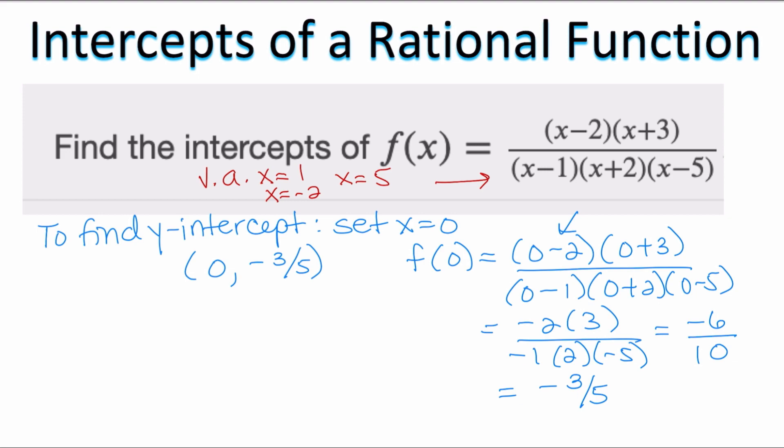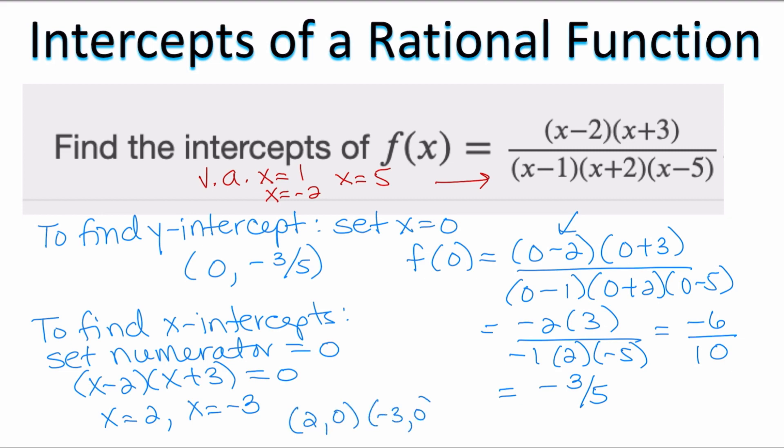In order for me to find the x-intercepts, 0 divided by any number is 0. So to find the x-intercepts of a rational function, we're going to set the numerator equal to 0. In this case, if x minus 2 times x plus 3 is equal to 0, then either x is equal to 2 or x is equal to negative 3. So those are going to be my x-intercepts, the points 2 comma 0 and negative 3 comma 0.